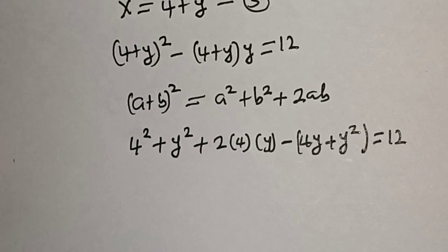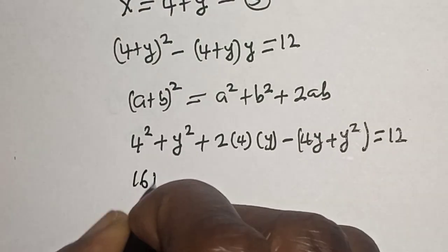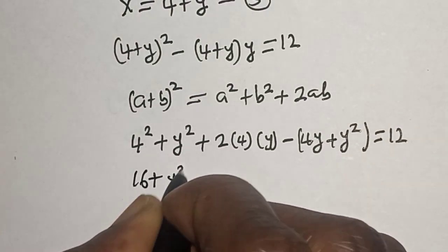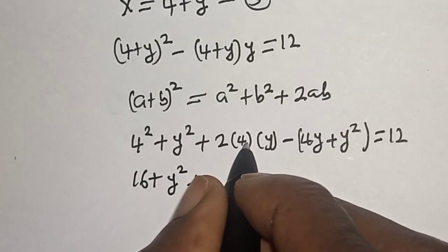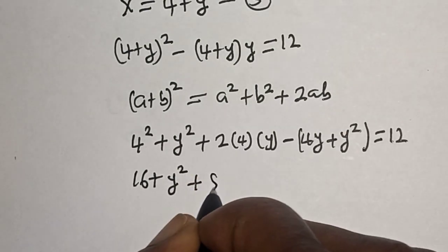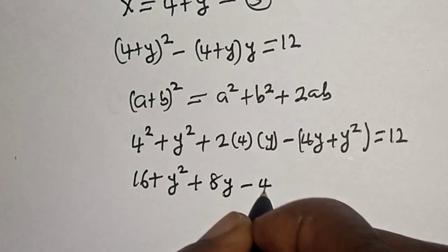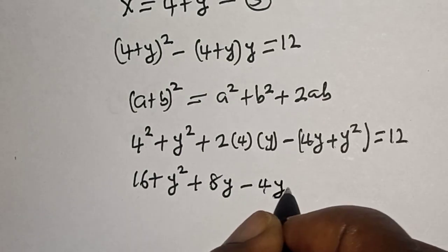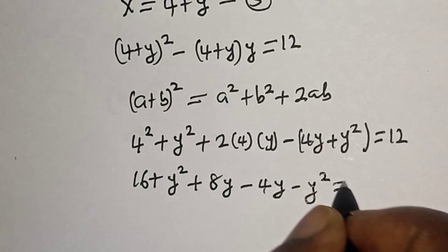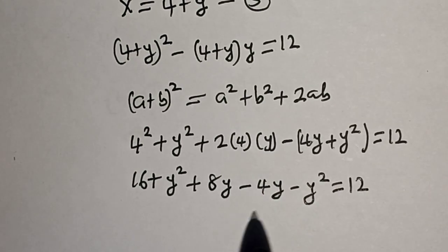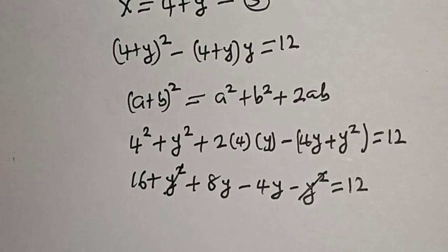This gives us 16 plus y squared plus 8y, then minus 4y minus y squared, is equal to 12. The y squared terms cancel out.